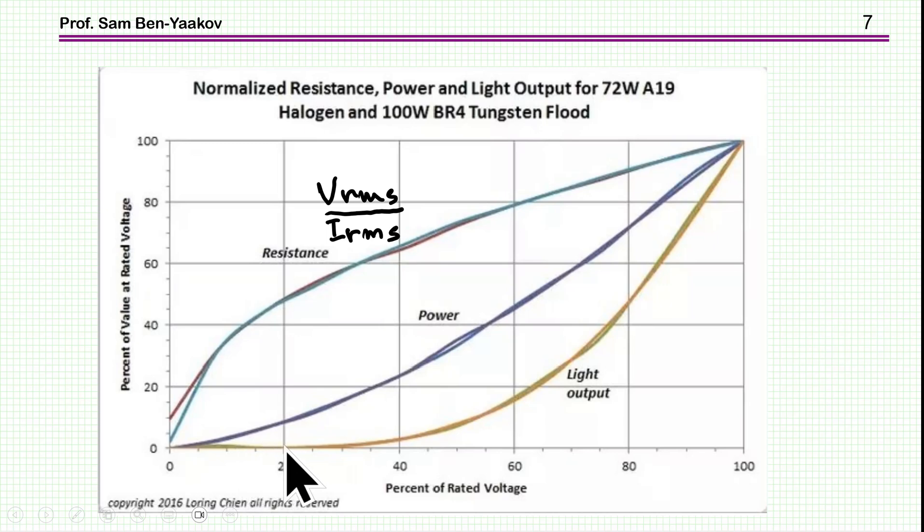So therefore, at low voltage, there is practically no output. The lamp, you don't see any light coming out. So this is the characteristic of the lamps.